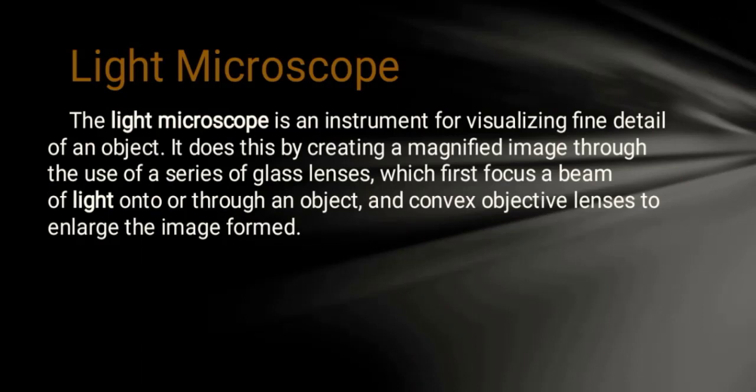Light microscope is an instrument for visualizing fine detail of an object. It does this by creating a magnified image through the use of a series of glass lenses which focus a beam of light through or on an object, and convex objective lenses to enlarge the image formed.